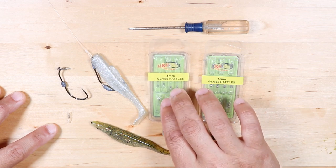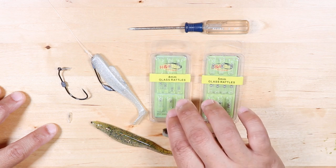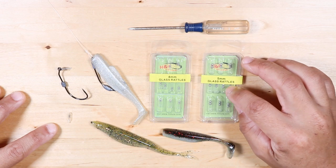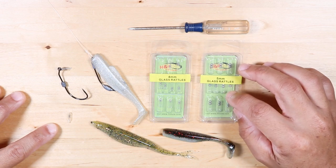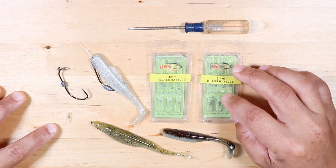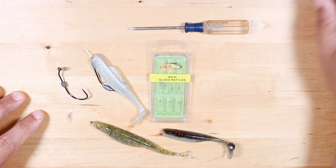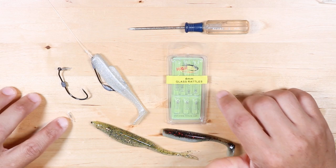I highly recommend the 4 millimeter rattle. They work pretty well for just about any soft plastic. When you start getting into these bigger ones, they will alter the shape of your bait and also get in the way of rigging your hook up.